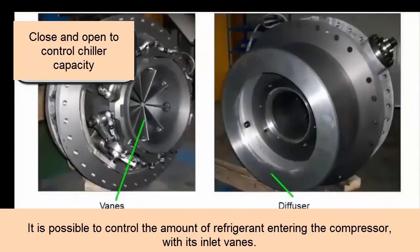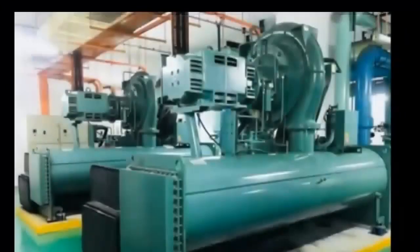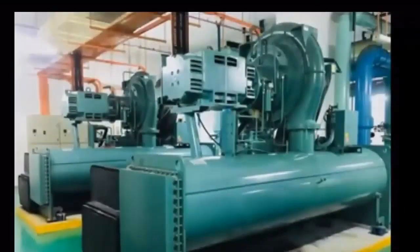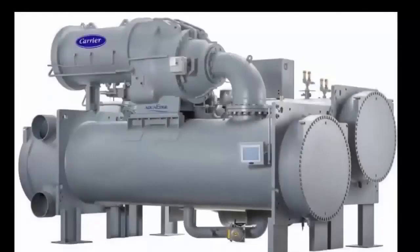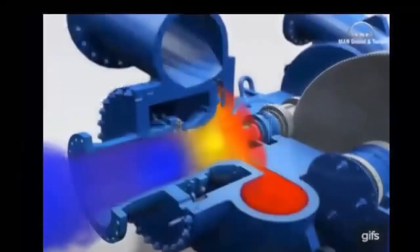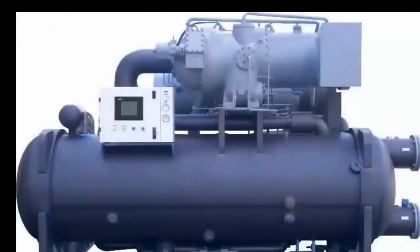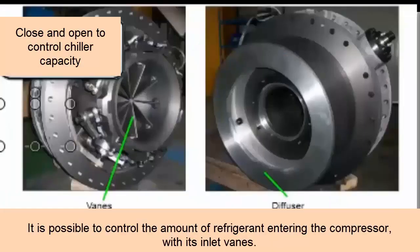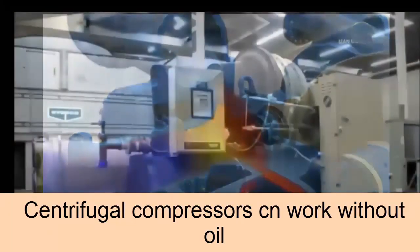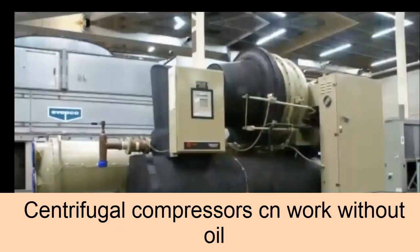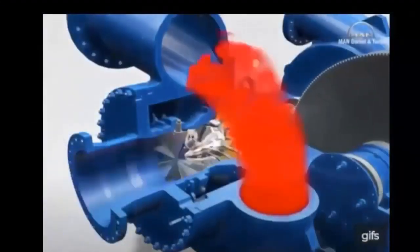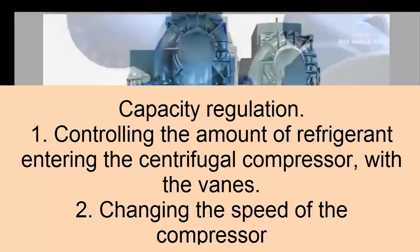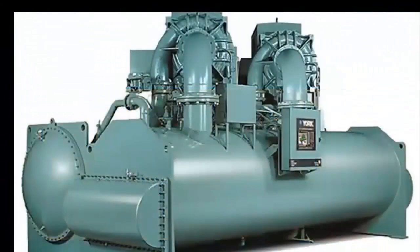As in all previous cases, we need to talk about capacity regulation. Whenever we talk about the chiller we discuss capacity regulation because it is the part that will allow us to adjust the electrical consumption to the cold production. The chiller with a centrifugal compressor will use two strategies to adapt to partial load. It uses the regulation of the refrigerant flow that enters the compressor through inlet vanes that can close and open to let more or less coolant through. The second regulation tip would be to vary the speed of the compressor. With these two parameters we will be able to adapt to the partial load, changing the input area to the compressor and varying the speed.